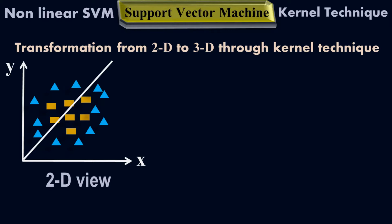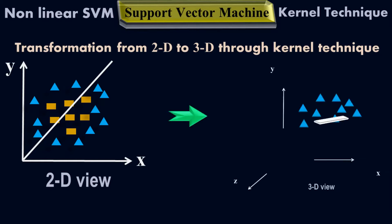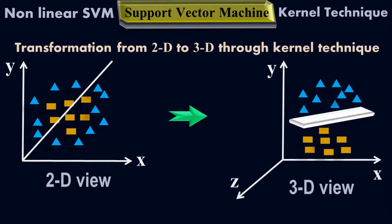I'm using the non-linear support vector machine. What non-linear support vector machine does is it uses the kernel technique. As I applied the kernel trick, I changed this data into 3D form. We went from two-dimension into three-dimension, from lower dimension to higher dimension.